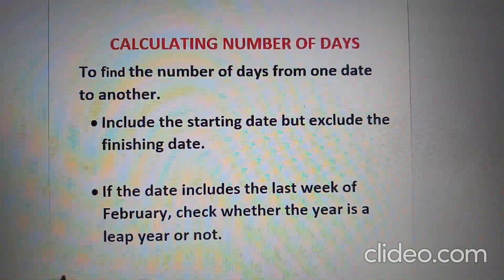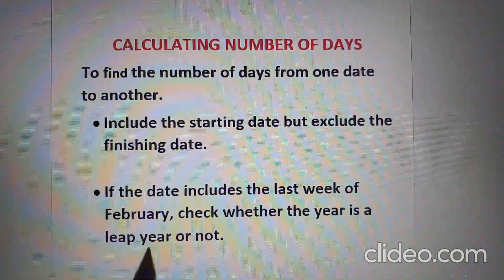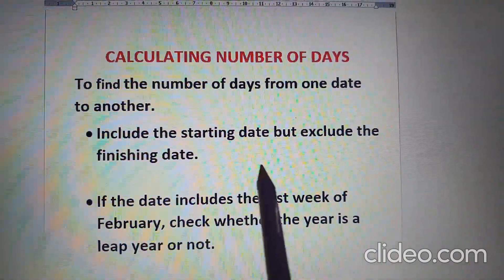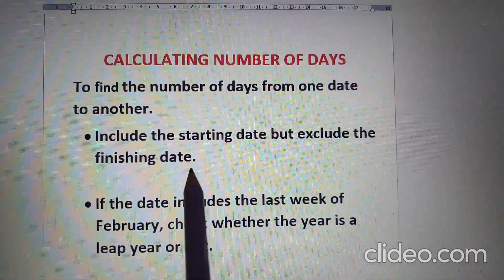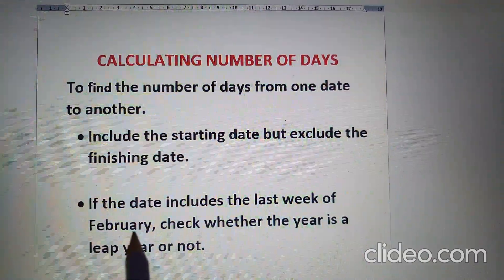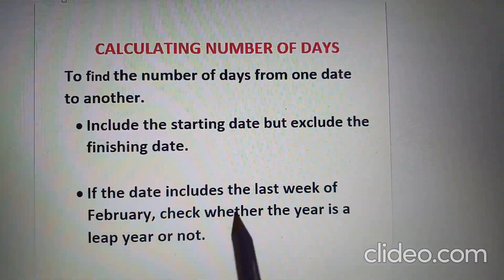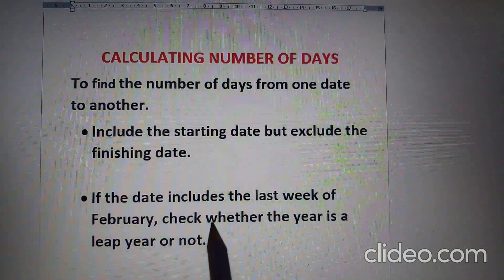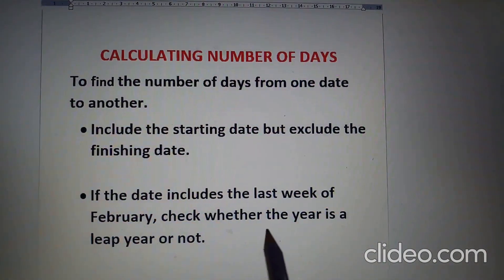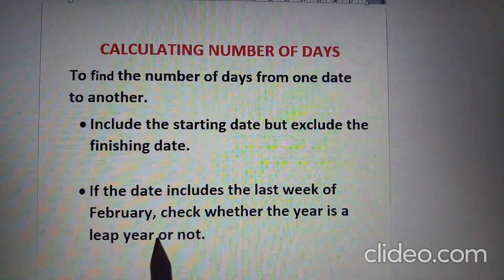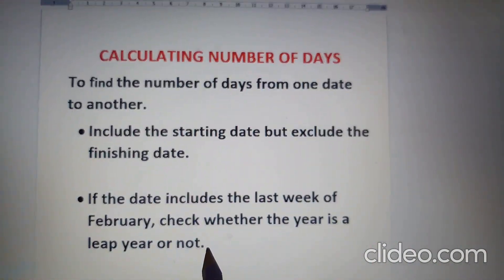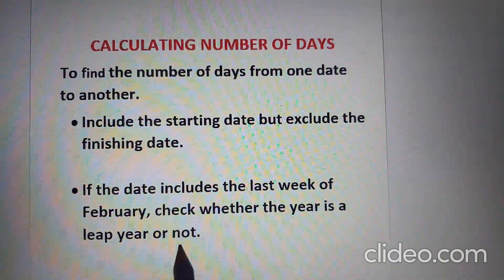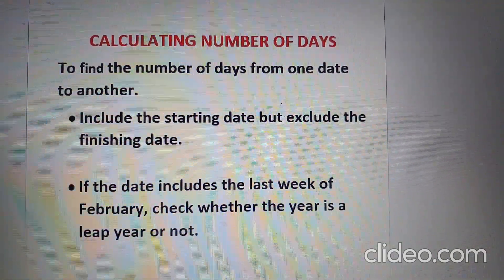Children, we include the starting date but exclude the finishing date. Means, hum starting date ko toh count karte hai but finishing date ko count nahin karte hai. And if the date includes the last week of February, hum dekhenge whether the year is a leap year or not. Agar leap year hai toh we will count 29 days, otherwise we will count 28 days.